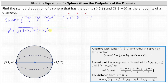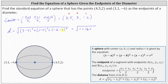Then plus (z₂ - z₁) gives us (-6 - 2). Simplifying, we have the square root of: the square of -1 is 1, plus the square of -4 is 16, plus the square of -8 is 64. Simplifying further, we have the square root of 81, which equals 9, because 9 times 9 equals 81.